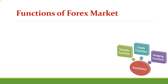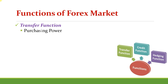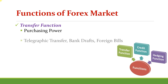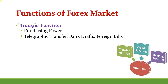Next, we will discuss the functions of Forex market. The main functions are the transfer function, credit function, and hedging function. The first is the transfer function. The basic function of the Forex market is to facilitate conversion of one currency into another, that is, to accomplish transfer of purchasing power between two countries. This transfer is done through a variety of credit instruments such as telegraphic transfer, bank drafts, and foreign bills.